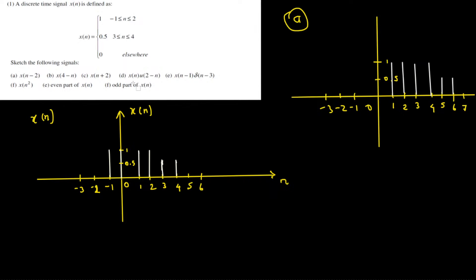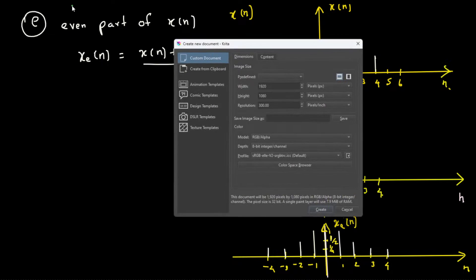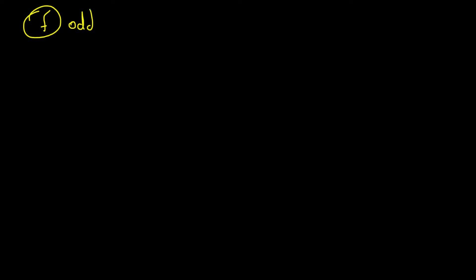We're going to do the f part of this question — specifically the odd part of x of n. I did all of the previous parts in my previous video, so you can watch that to get the idea. Here I'm going to deal with the odd part of x of n.